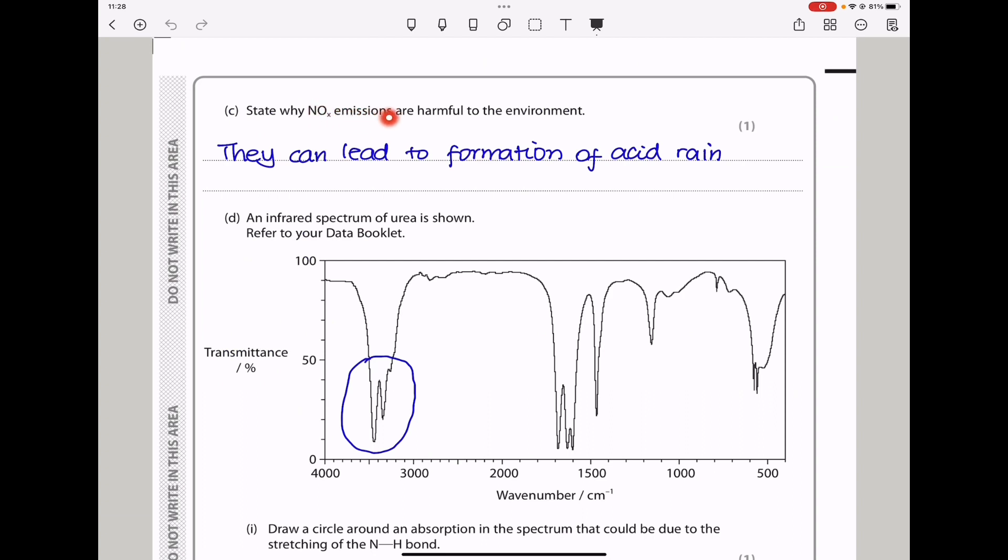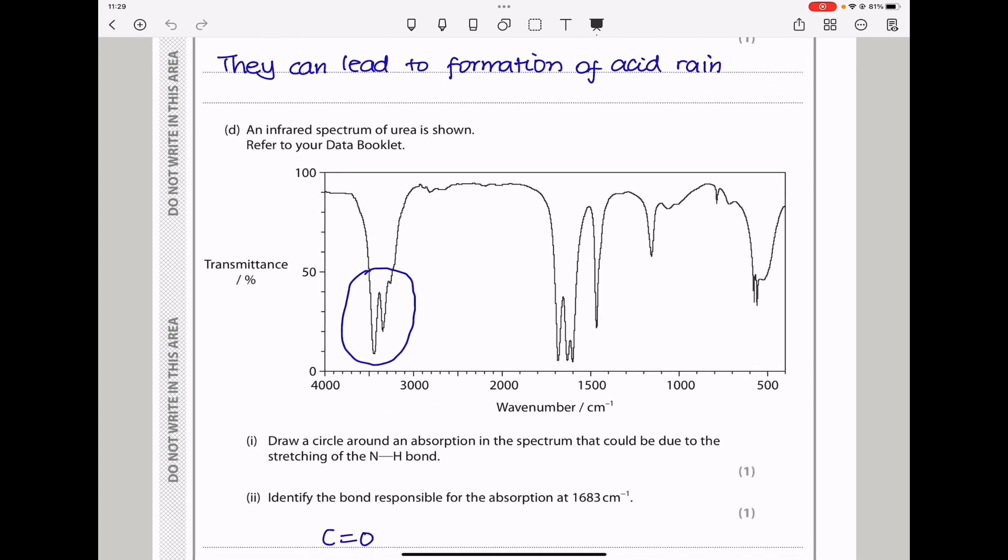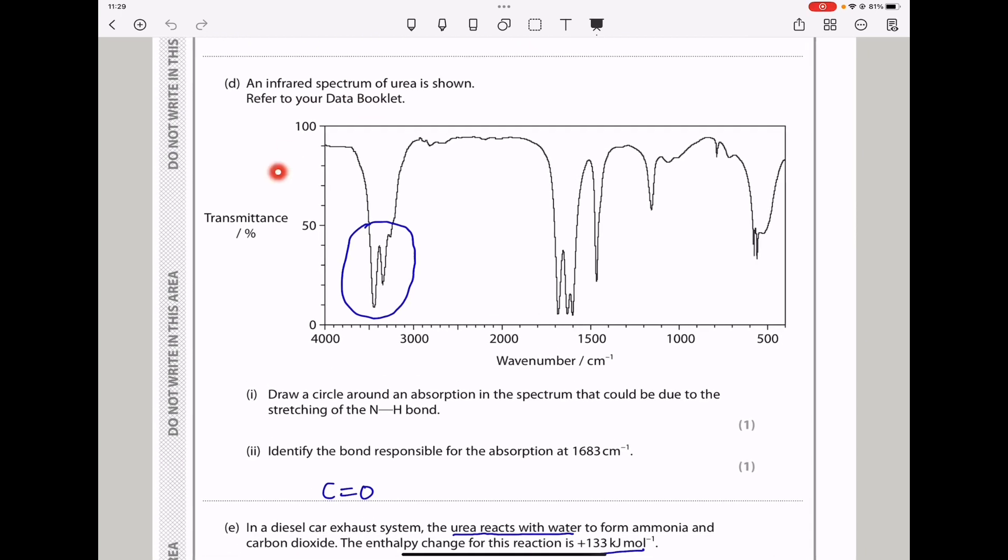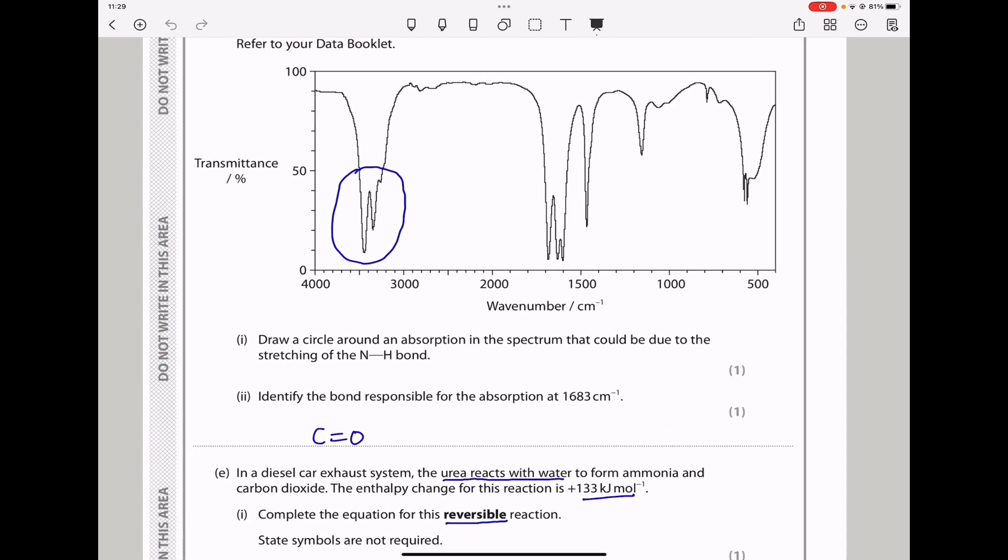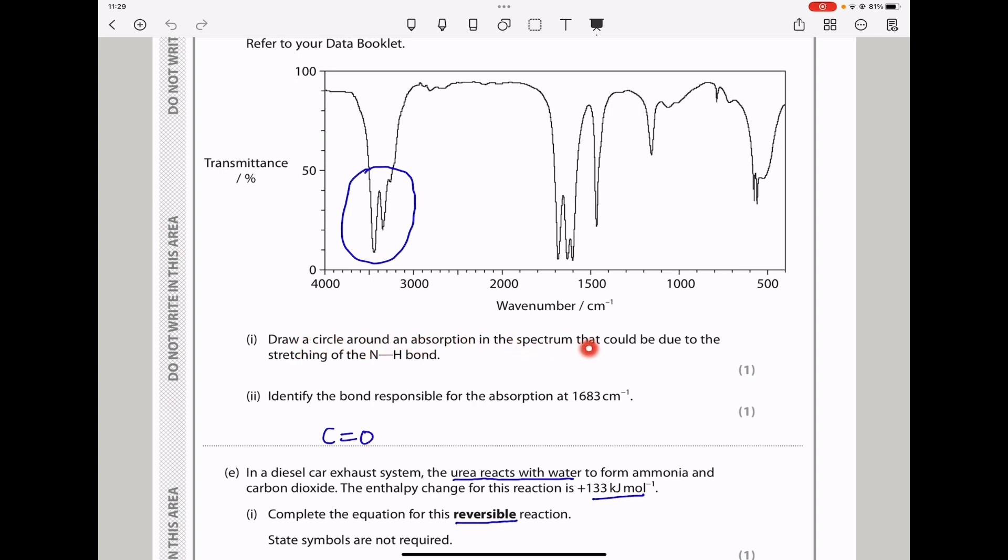Moving on. Here they say, state why NOx emissions are harmful to the environment. Oxides of nitrogen can react with water and form acids or acid rain. As I say, they lead to the formation of acid rain. The next part says, an infrared spectrum of urea is shown. Refer to your data booklet. So here we have transmittance on the vertical and then wave numbers on the horizontal. They wanted us to draw a circle around the absorption spectrum that could be due to the stretching of nitrogen-hydrogen.